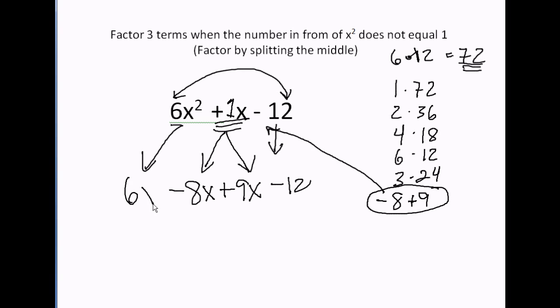And I bring down the 6x squared. And now I'm going to factor by grouping. I group the first two parentheses. I group the second two parentheses. And there has to be a plus sign between them.